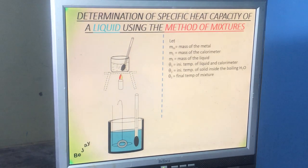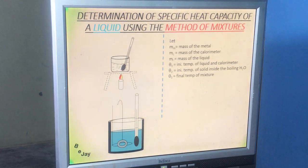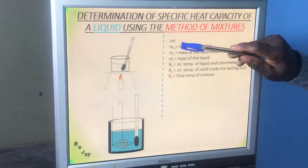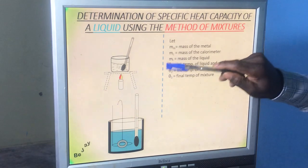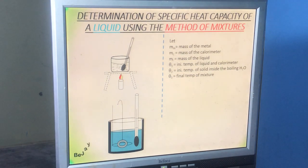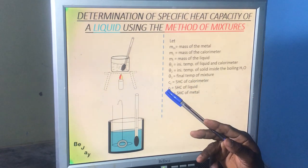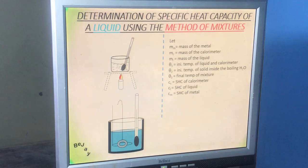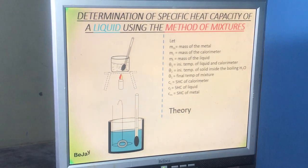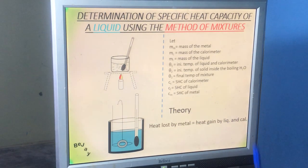We are dealing with sensible heat for these three components. The theory of the experiment is: heat lost by the metal equals heat gained by the liquid and calorimeter. This is the key principle. If you don't get the theory right, you will have challenges. Heat loss by the metal is equal to heat gain by the liquid and calorimeter.